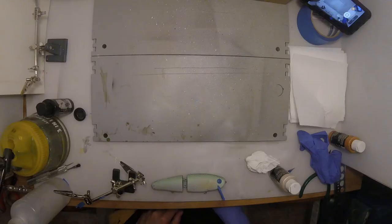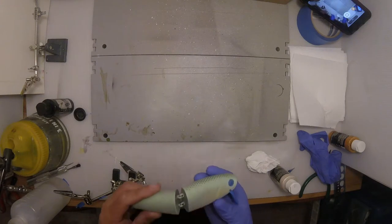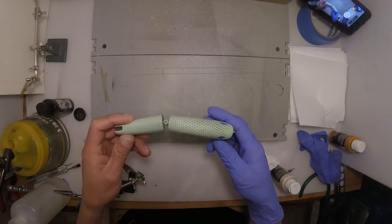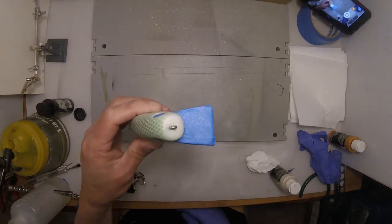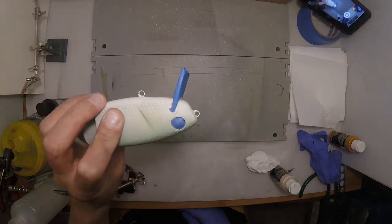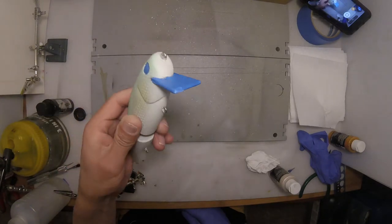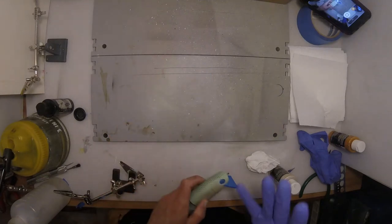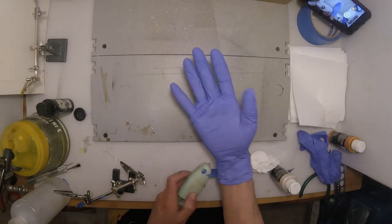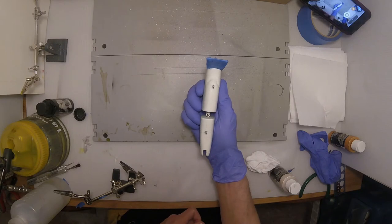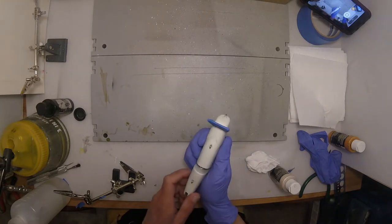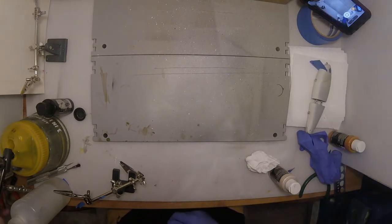So here we are at the paint booth. We have our bait and it's all masked off - we have the eyes masked, we have the bill masked, everything looks good. We have a glove on and that is just because I'm going to have to hold the bait like this and I don't really like paint on my hands too much. It's just a pain to get off.